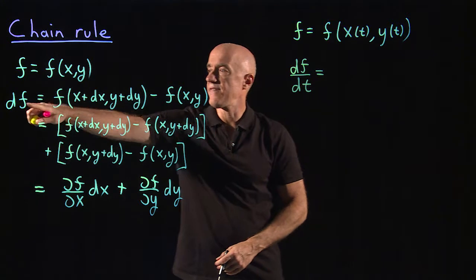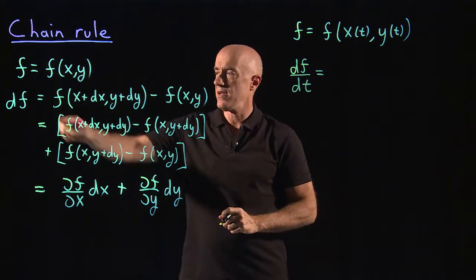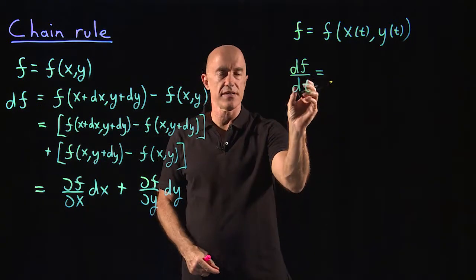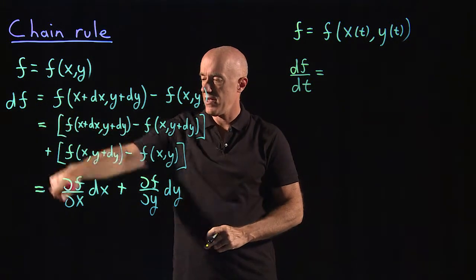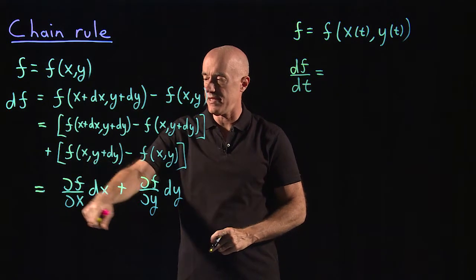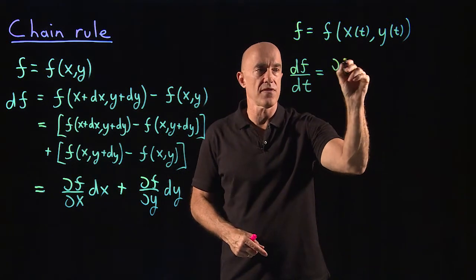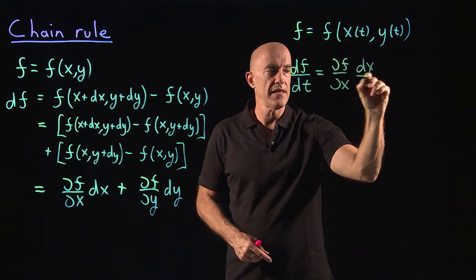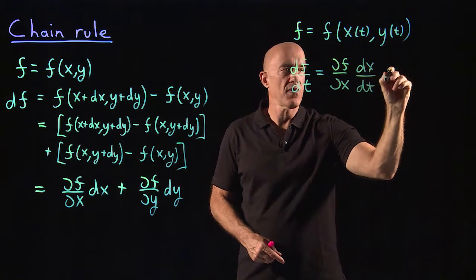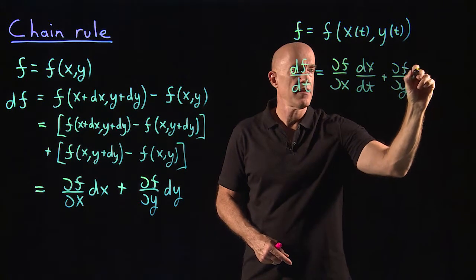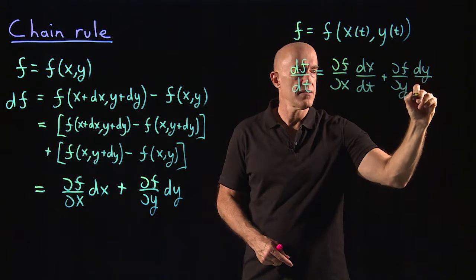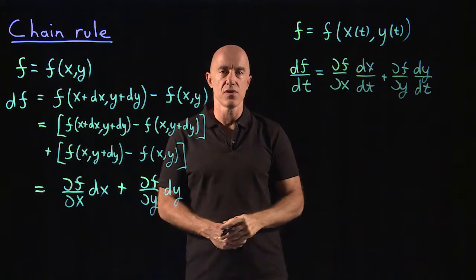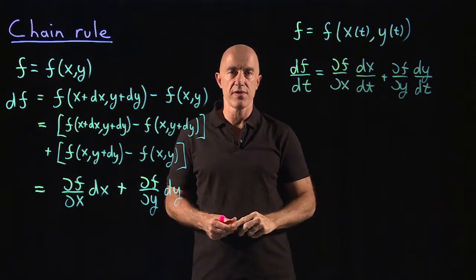We know what df is, so this is df in the numerator. We can divide through by dt in the denominator. If we divide the expression by dt, we get partial f with respect to x times dx/dt, plus partial f with respect to y times dy/dt. And that's the chain rule for partial derivatives.